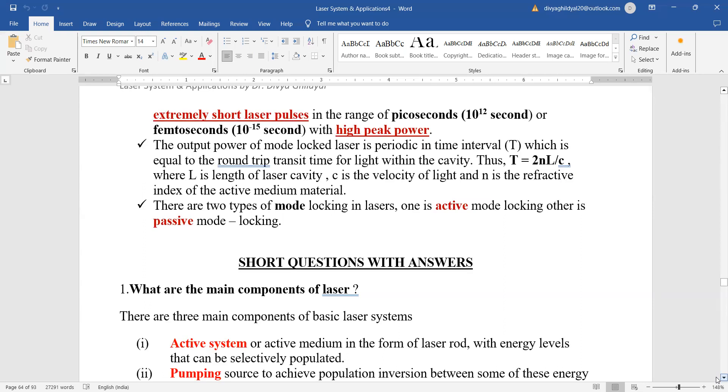The output power of mode lock laser is periodic in time interval which is equal to the round trip transit time for light within the cavity. That means time is equal to distance upon speed, that is 2NL divided by C.